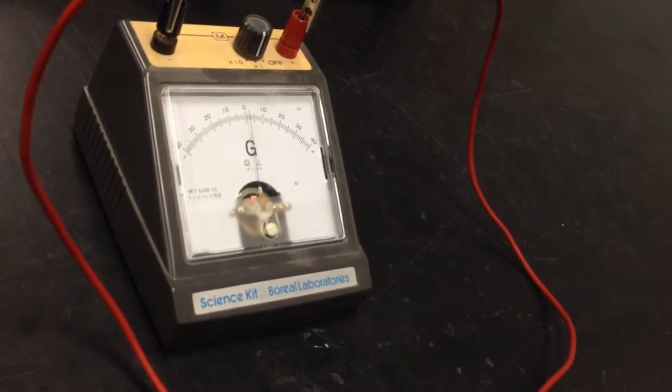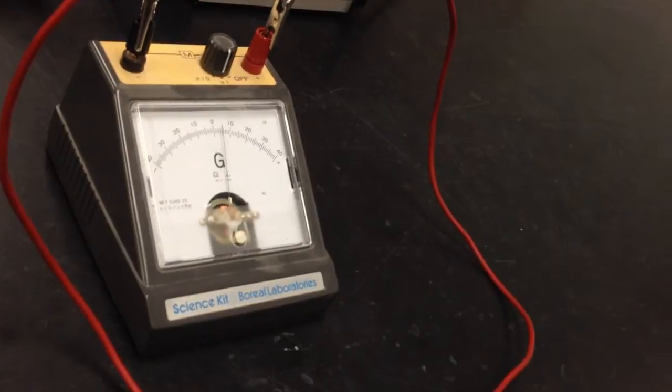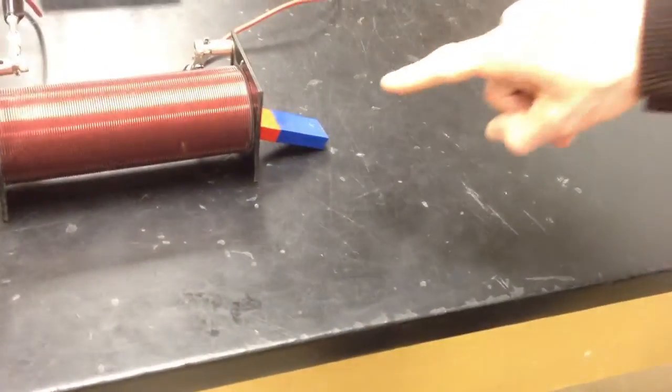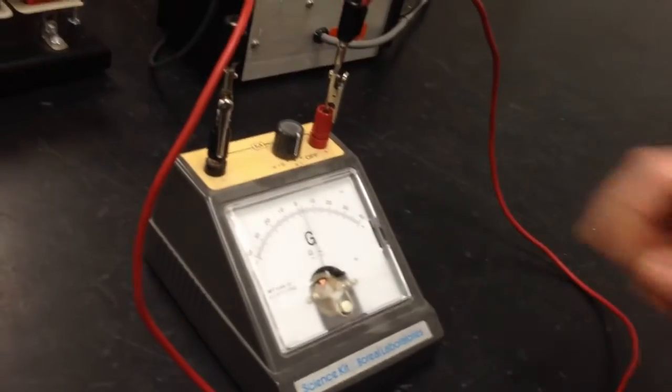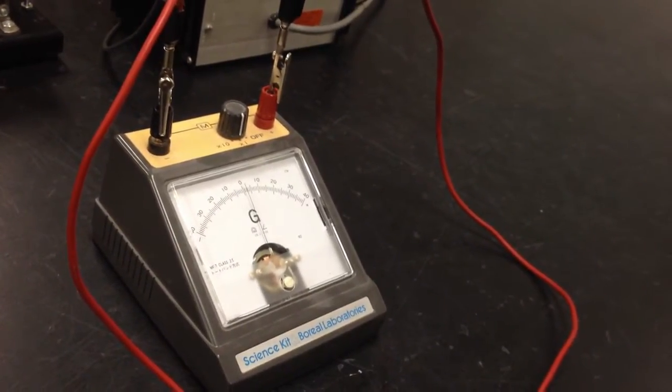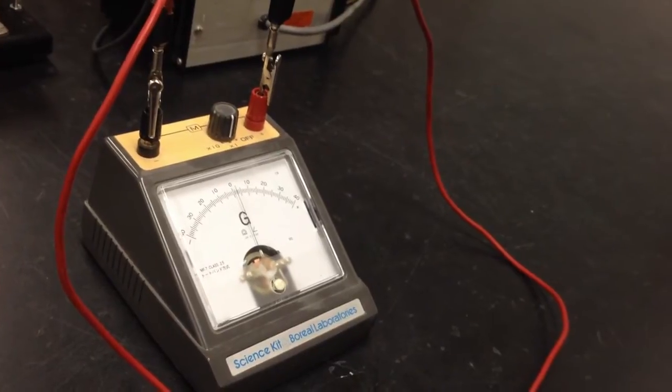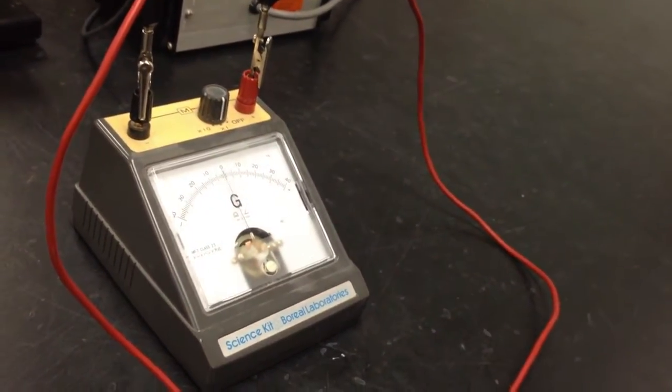The north pole is now being inserted, and the needle deflects. The north pole is now sitting stationary, there's no deflection. The north pole is now being removed, and the needle goes the other way. So what you find is that it's not a magnetic field that causes a current.